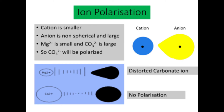Ion polarization: in a compound, when the cation is smaller and the anion is non-spherical and large, that compound will be polarized. The Mg²⁺ ion is small, but the carbonate CO₃²⁻ ion is large and non-spherical.